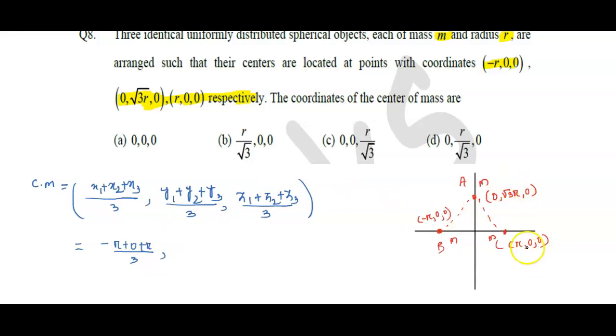Y₂ is √3R, and Y₃ is 0. So (0 + √3R + 0)/3.